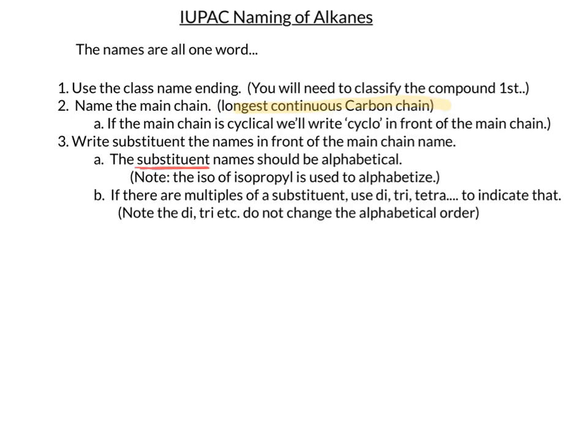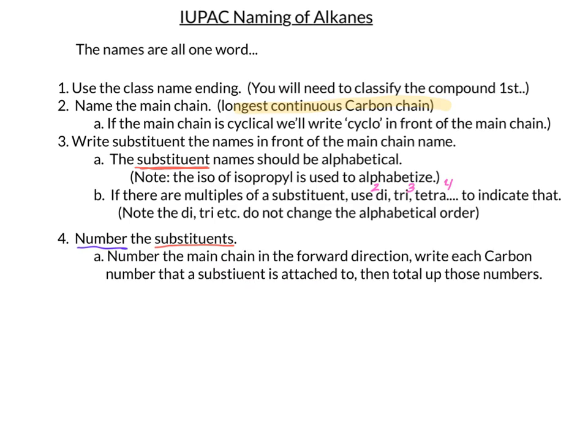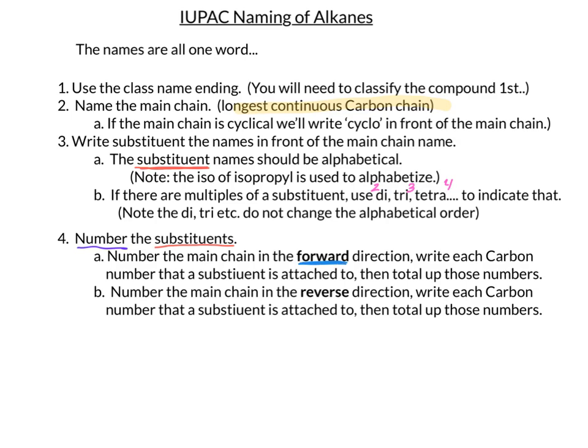What happens if I have more than one of the same group? If I have two of them, I would put di; if I have three, I'd put tri; if I had four, I'd put tetra. We can continue following that pattern up to 10 using the covalent naming system. Now that we've placed all our substituents in the name, we must number them. We need to tell the location of each substituent. The best way to do that is to number the carbon chain first in the forward direction and then in the reverse direction.